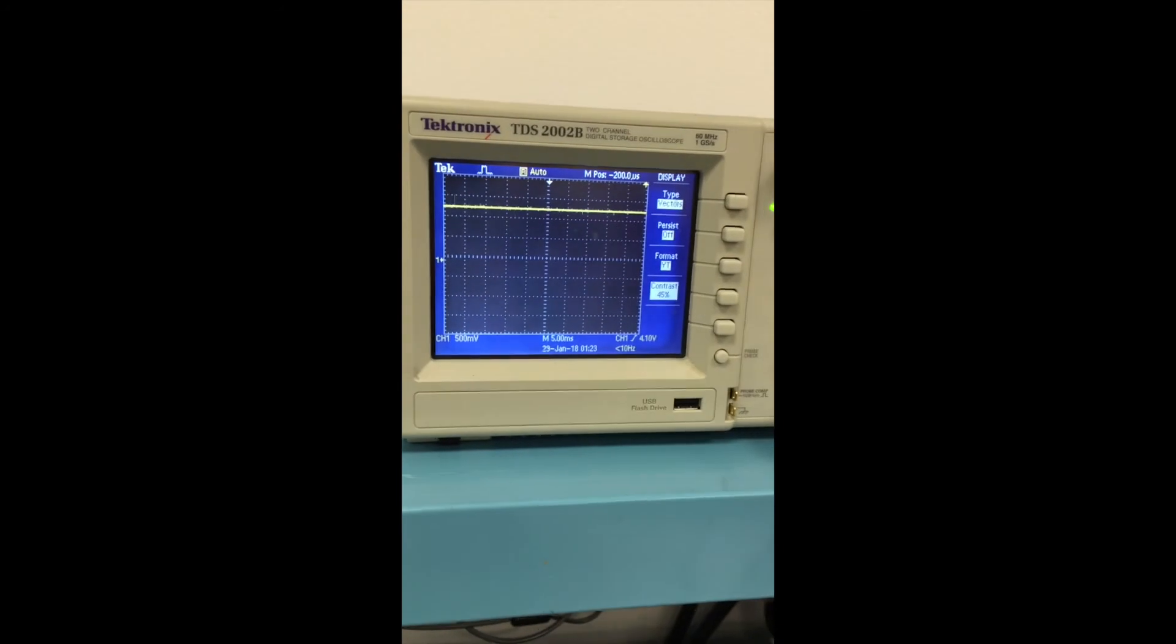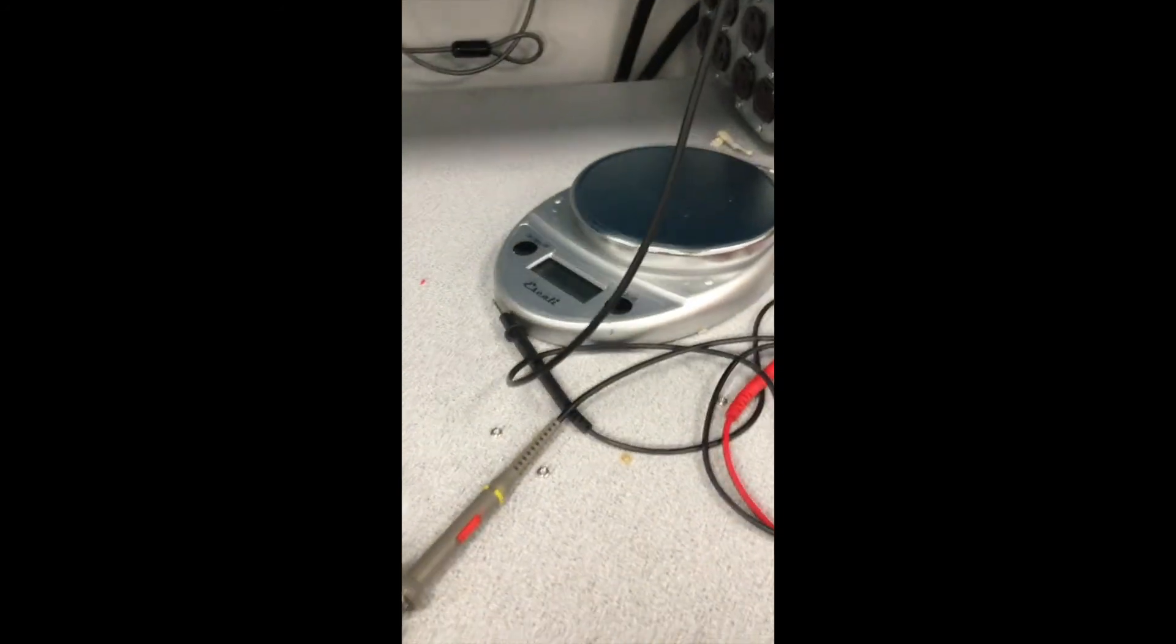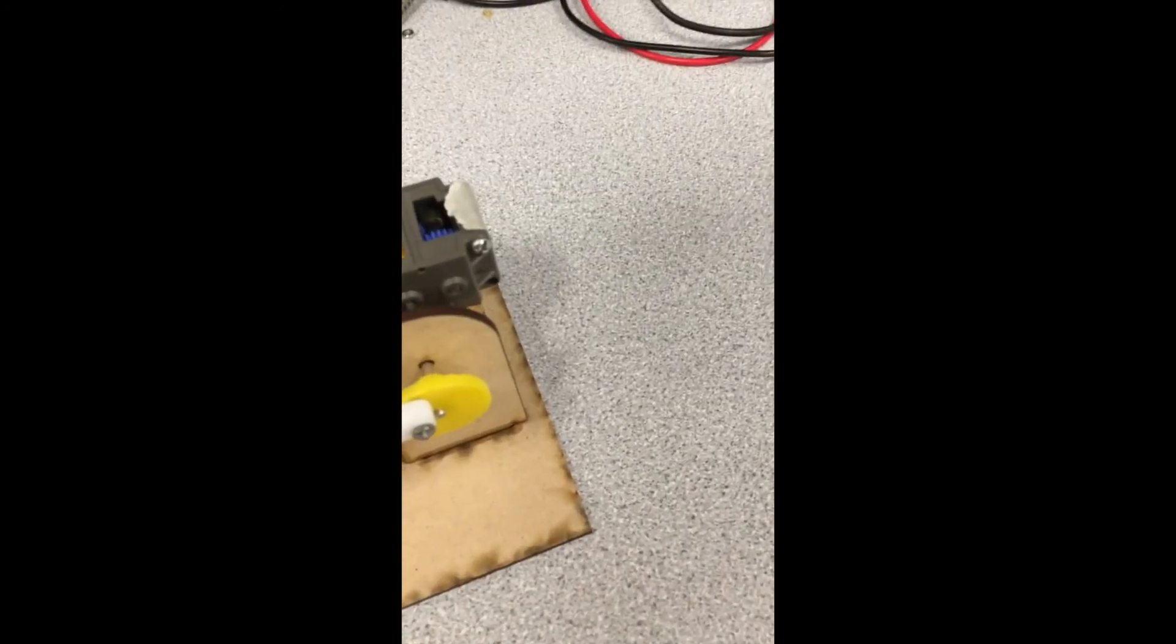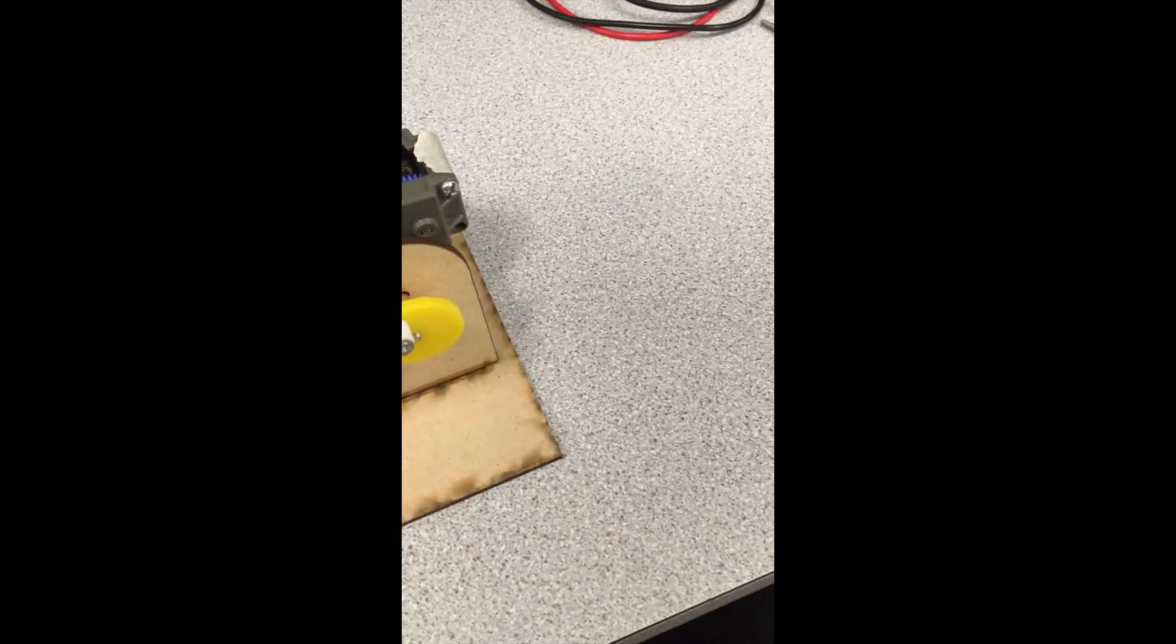For our project, we attached the accelerometer to the moving cube part through a screw and nut, and oriented the accelerometer so that the Y axis pointed upwards, and the X axis was horizontal.